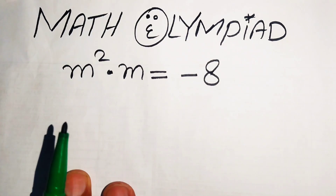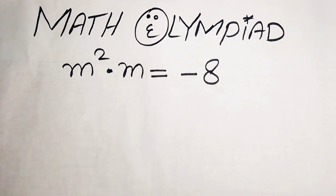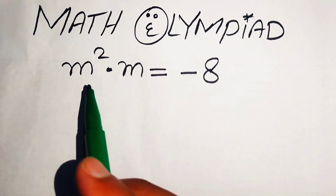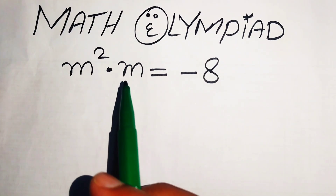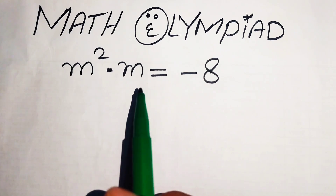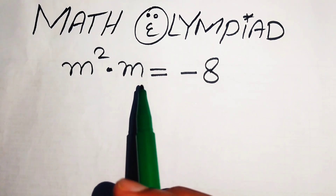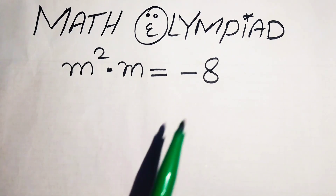Hello everyone, welcome. We're going to solve this algebra problem: m squared times m equals minus 8, and we solve this problem for the values of m.